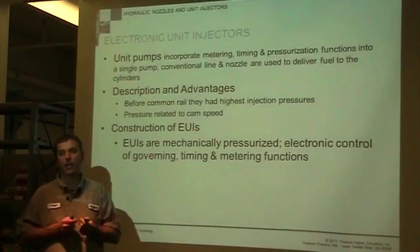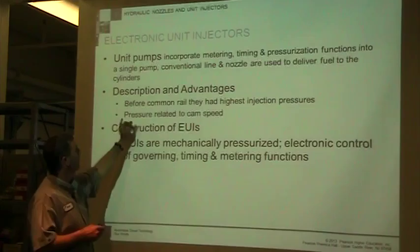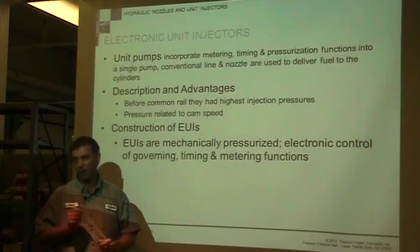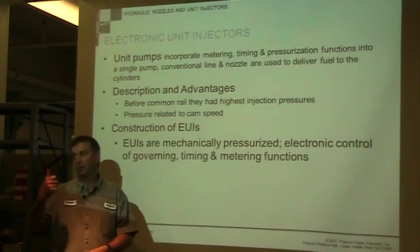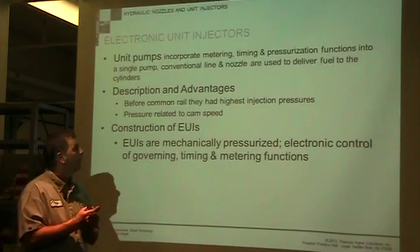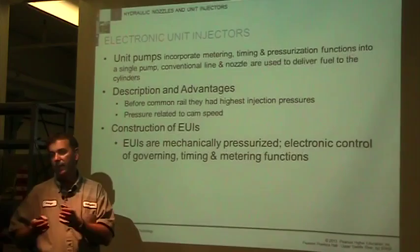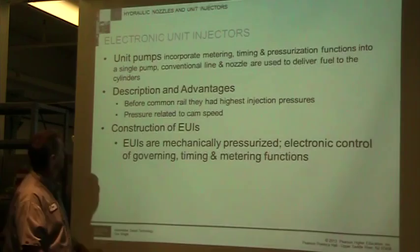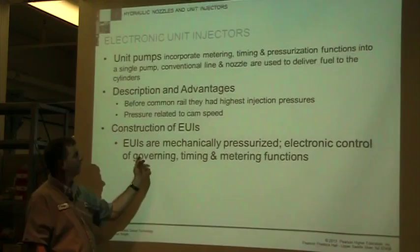Before common rail, individual unit pumps had the highest injection pressure — which goes well with direct injection nozzles. The problem is that pressure is related to cam speed: the slower the engine, the lower the pressure; the higher the RPM, the more pressure. So there's a direct relationship between speed and available injection pressure. We have a lot more trouble atomizing well at idle, which is made worse by the cam-driven design.